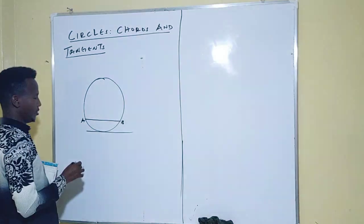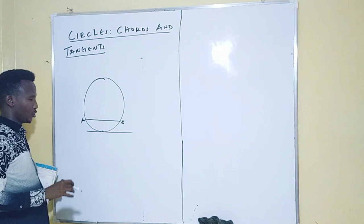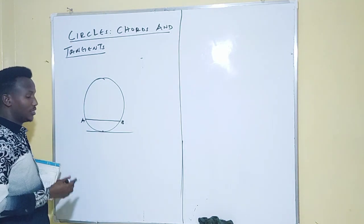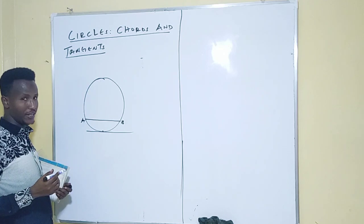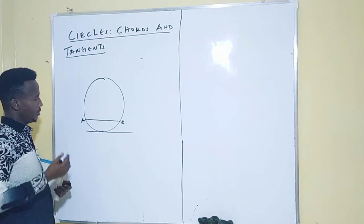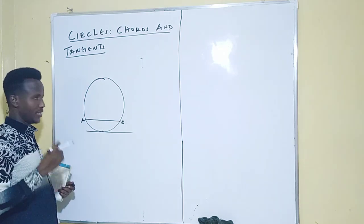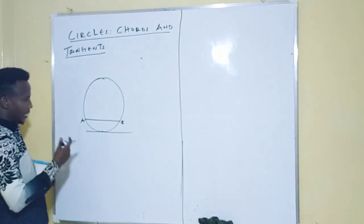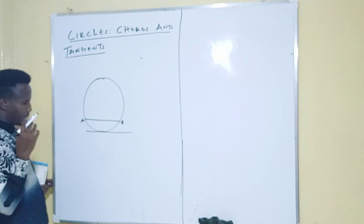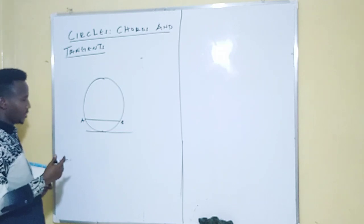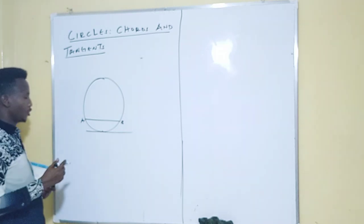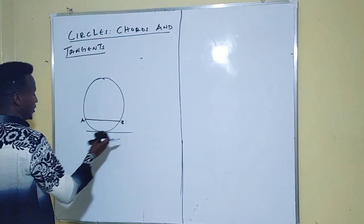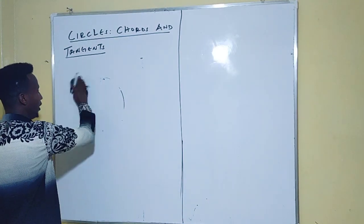This is what you normally call a tangent, and this is the point of contact. A tangent is perpendicular to the radius, meaning the angle formed by a tangent and a radius is always 90 degrees, which we'll discuss later. A tangent is a straight line drawn from an external point to a circle which has one point of contact with it.